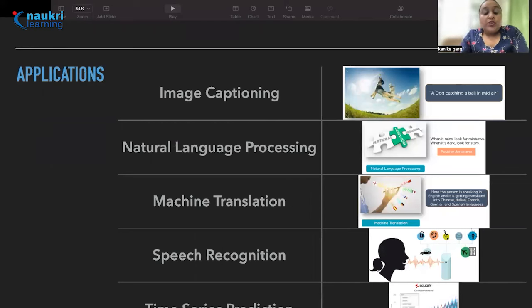Now let's talk about some of the major applications that RNN has. The major one is image captioning. As you can see in the diagram there is a dog who tries to catch a ball. So it is automatically captioning the image stating a dog catching a ball in mid-air. RNNs are basically used to caption an image by analyzing the activities present in the image at that time.